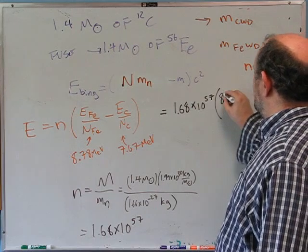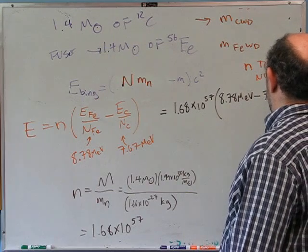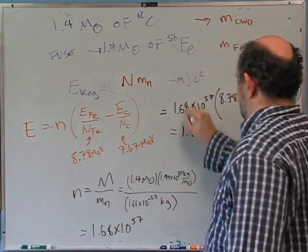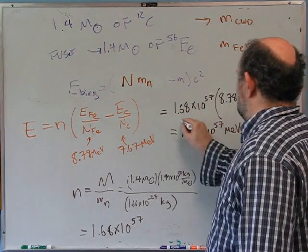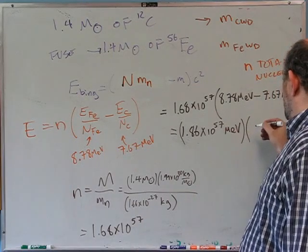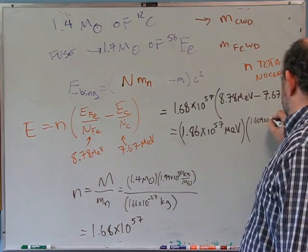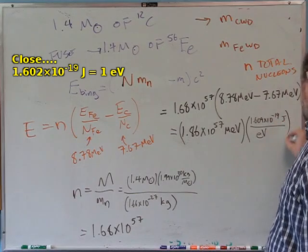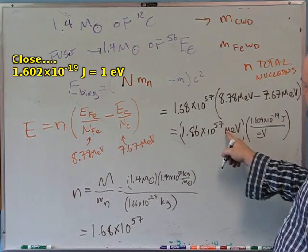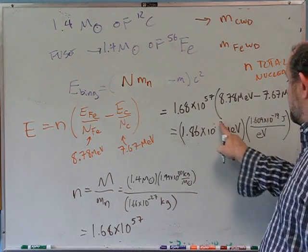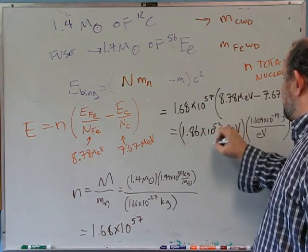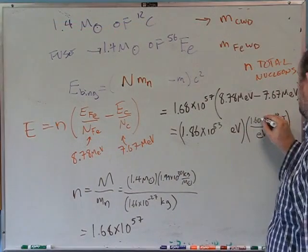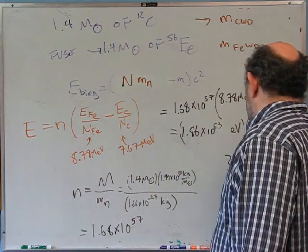The difference in binding energies per nucleon is 8.78 − 7.67 = 1.11 MeV. So energy released = 1.68×10⁵⁷ × 1.11 MeV ≈ 1.86×10⁵⁷ MeV. Converting to joules: 1.602×10⁻¹⁹ J/eV × 10⁶ eV/MeV gives 10⁶³ eV total, and multiplying: approximately 3×10⁴⁴ joules.